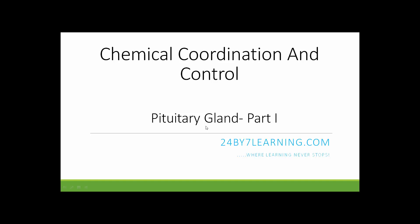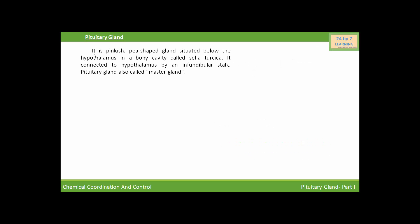Hello students. In this video we are going to discuss one of the most important endocrine glands of the human body, that is the pituitary gland. It is a pinkish pea-shaped gland situated below the hypothalamus in a bony cavity